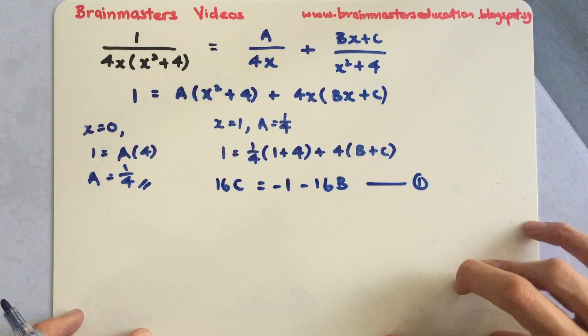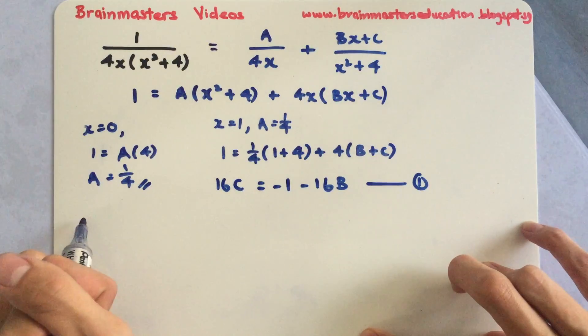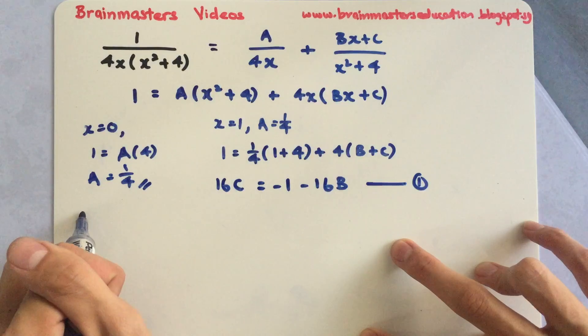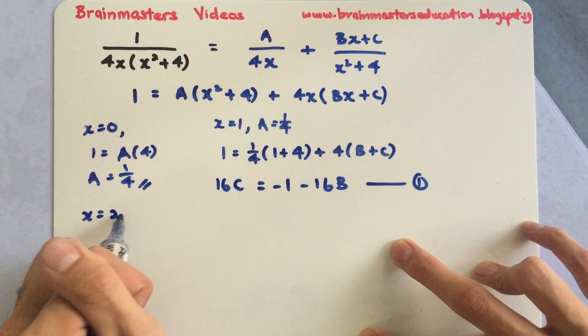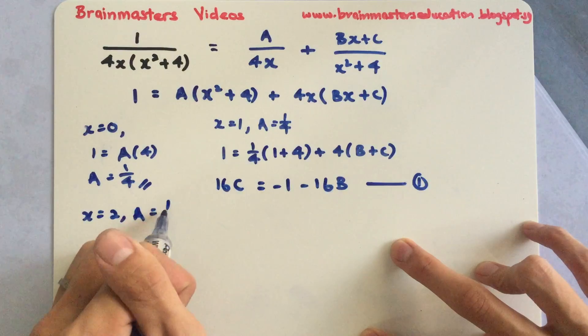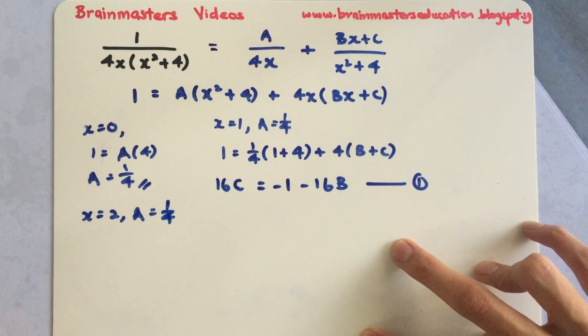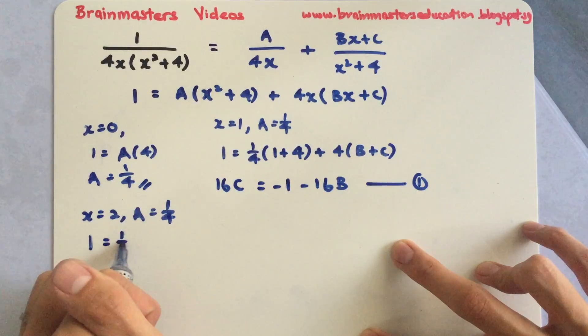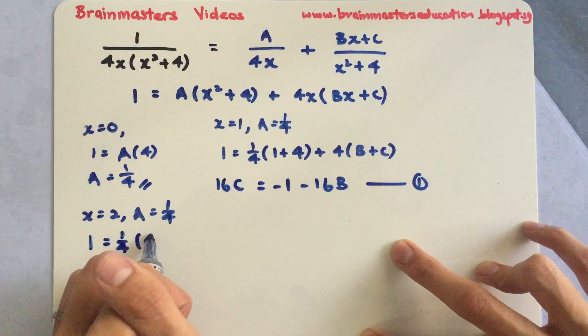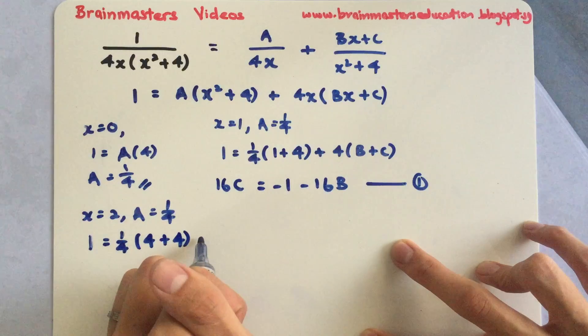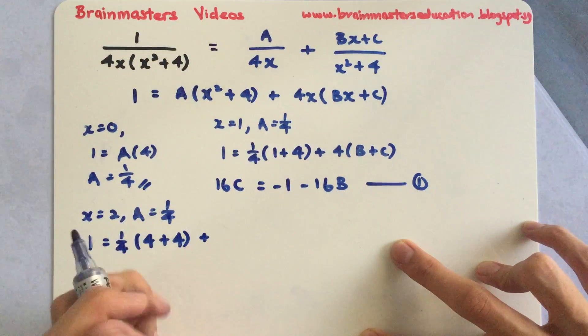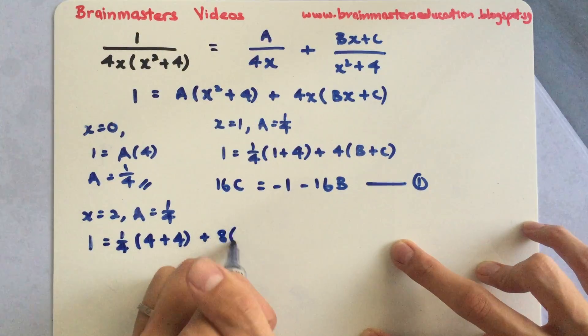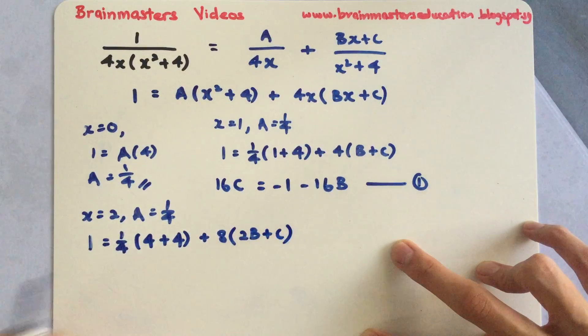Next, what I will do is find my equation 2 now, which is x equals to 2. Same thing, I will substitute A equals to 1 over 4. So 1 equals to 1 over 4 times 4 plus 4, plus 8 times 2B plus C.